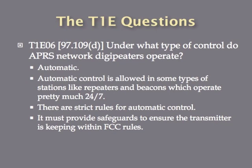Under what type of control do APRS network digipeaters operate? APRS stands for Automatic Packet Reporting System — it's basically a series of transceivers that communicate a location and a piece of information like a weather report, text messages, or you can even link into the internet through them. Since they operate on a 24/7 basis, it's difficult to have a human being behind the control panel. So these types of stations fall under Automatic Control, which allows the station to operate without a control operator present but still conform to FCC rules. The answer is Automatic Control.